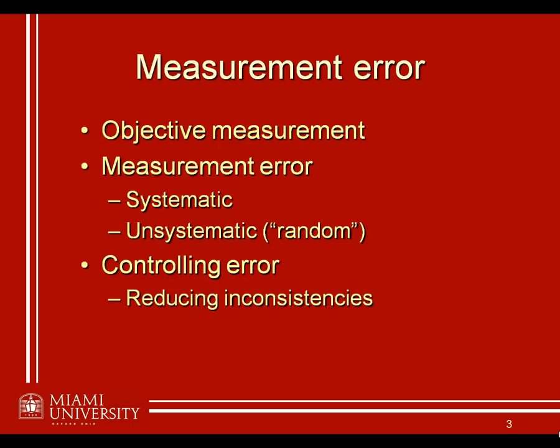What we're trying to do whenever we're measuring psychological constructs is to control this error and reduce inconsistencies. Because if we're measuring a construct incorrectly, we're going to ultimately draw conclusions about that construct incorrectly as well. So when we talk about reliability and validity, what we're really trying to do is control for systematic measurement error — reduce the inconsistencies and make stronger claims about the actual constructs we're investigating by making sure that we're measuring them the best way that we can.